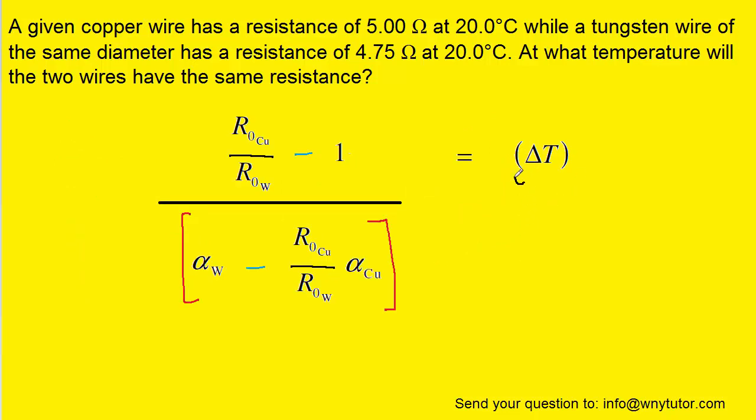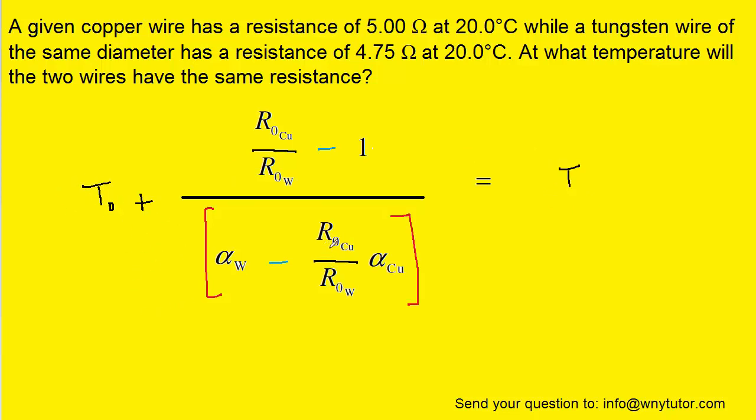We're almost there. Delta t can be now re-substituted with t minus t zero so that we can then add t zero over to both sides of the equation. And so we've done it. We've isolated t which will represent the temperature at which these two wires have the same resistance.